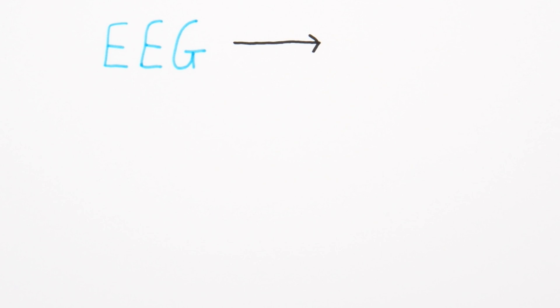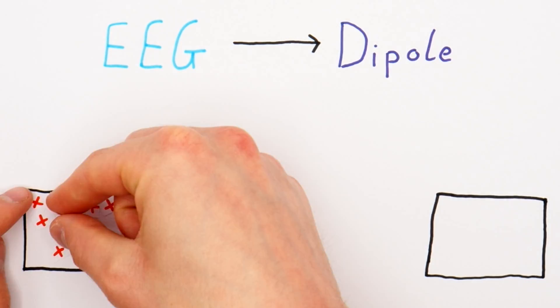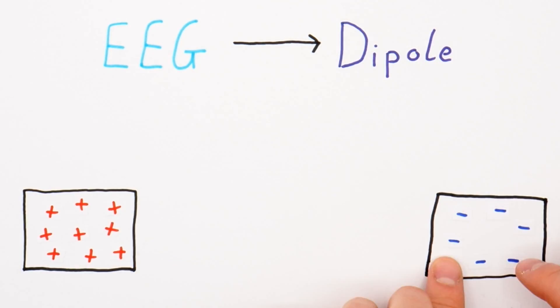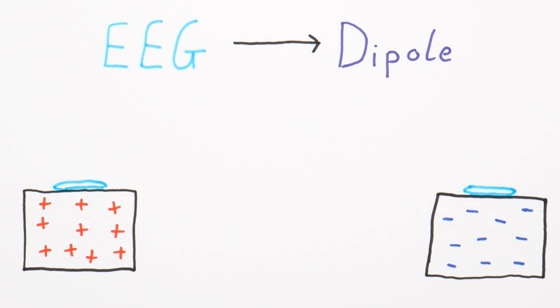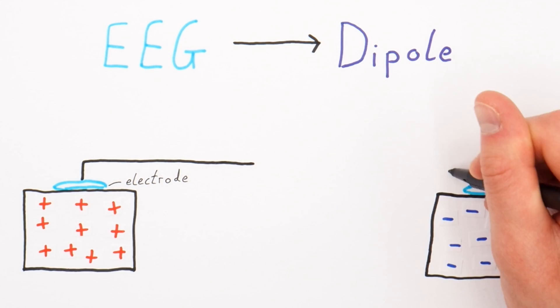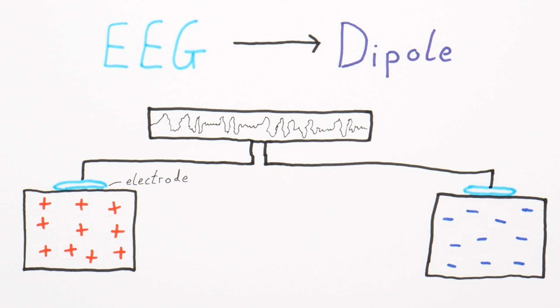This video will focus on scalp EEG. So how could this technology actually work? EEG exploits something called a dipole. A dipole is two different charges that are separated by a distance. So if we stick electrodes — bits of metal that conduct electricity — here and here, we can generate a readout of the difference in charge between these two areas.